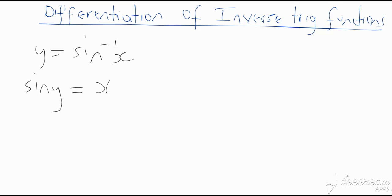Initially the function was explicit; now it's implicit. Or we could even look at it as an explicit function if we use x as the subject of the formula. We could find dy/dx, or we could treat x as the subject and find dx/dy. Let us do it both ways and see what happens.